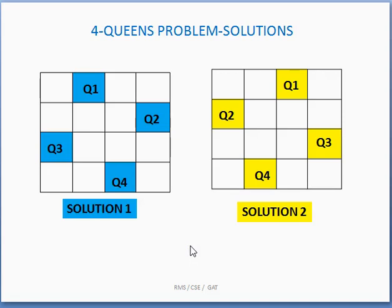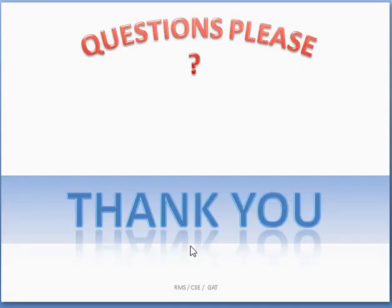By finding solution one and its mirror image, we obtain solution two. We can conclude that for the four-queens problem there are two possible solutions. In the same way, we can find solutions for more queens, such as the eight-queens problem. If you have any questions, please feel free to post them. Thank you.